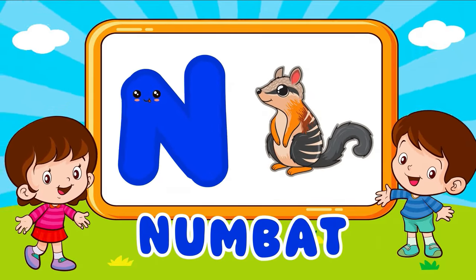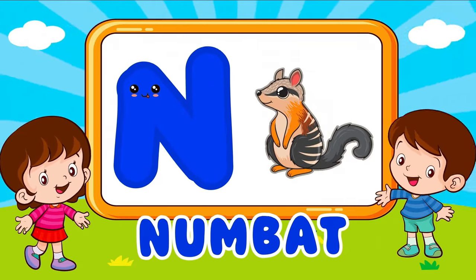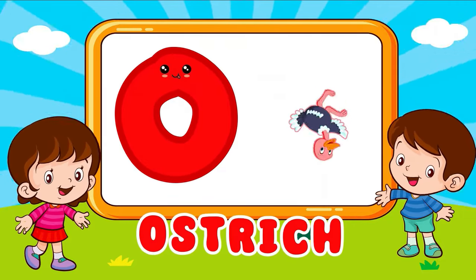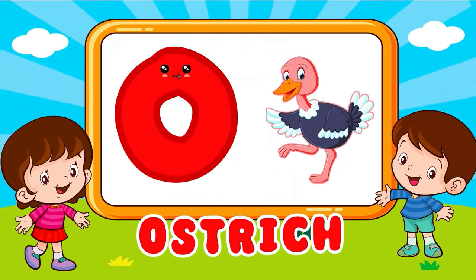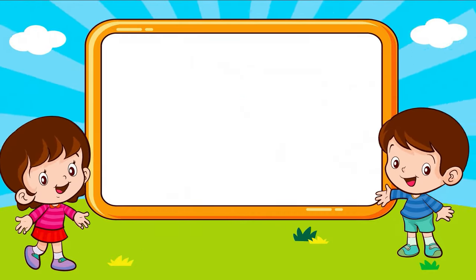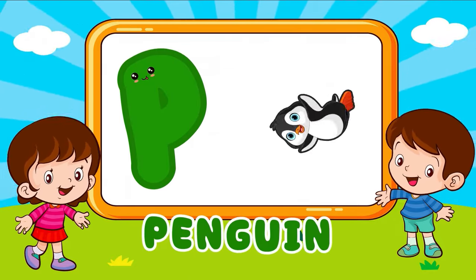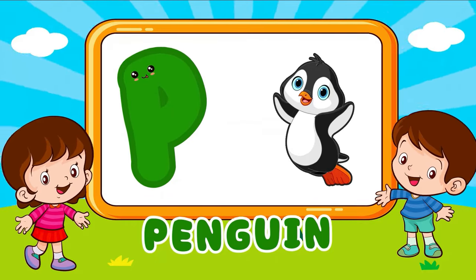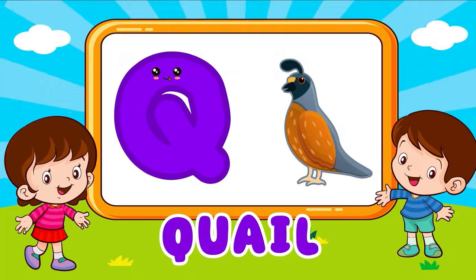N is for numbered. M, numbered, N is for numbered. M, M. O is for ostrich. R, ostrich, O is for ostrich. R, R. P is for penguin. P, P, penguin, P is for penguin. P, P, P.